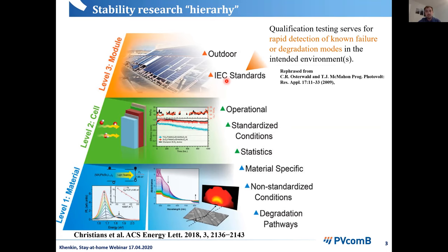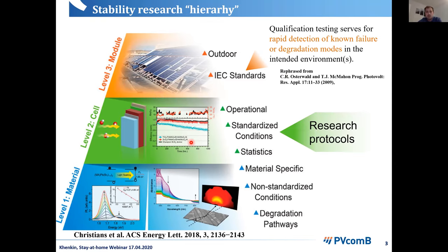The go-to place for the whole PV industry would be IEC standards like IEC 61215 — the qualification and type approval — which is a set of stress tests with pass-fail criteria. If you go through it and lose less than a certain amount of efficiency, you can sell your solar module on the market. This works well only because everyone who constructed those IEC standards knew the degradation modes active in those devices.